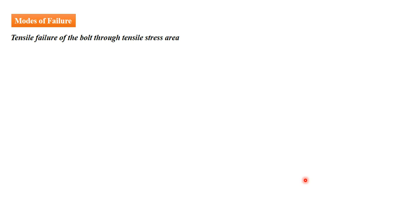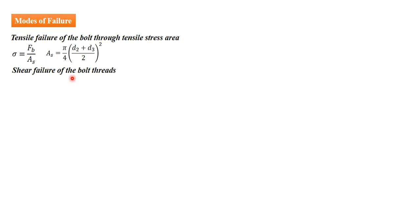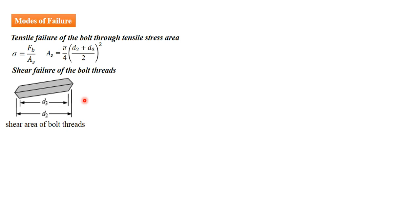A bolt must be designed for different modes of failure. The first mode is tensile failure through the tensile stress area, where Fb is the load on the bolt calculated from previously derived equations. If stiffness is neglected, the external load is Pb. The second mode of failure is shear failure of the bolt thread. Since we assume load acts along the shear area, shear failure also occurs along that area. The shear area of the bolt thread is given by π × d3 × h, where d3 is the root diameter.